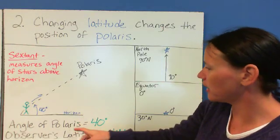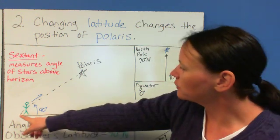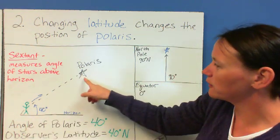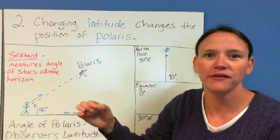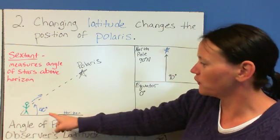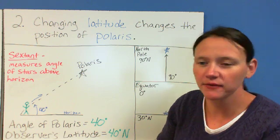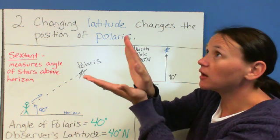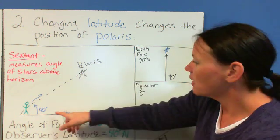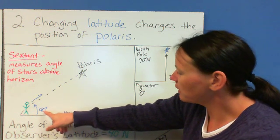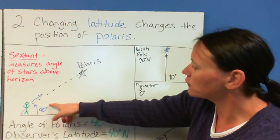If we take a look right here, you're standing outside, you look up in the sky, and you see Polaris. You can use this instrument called the sextant, and that measures the angle of the star above the horizon. It just kind of measures how you are looking straight up in the sky.